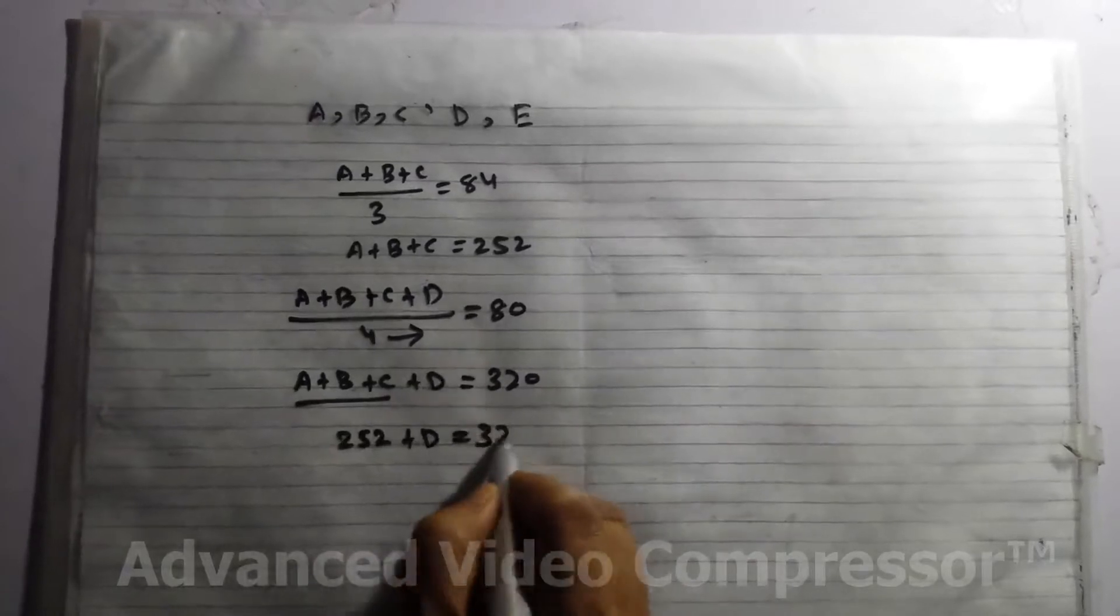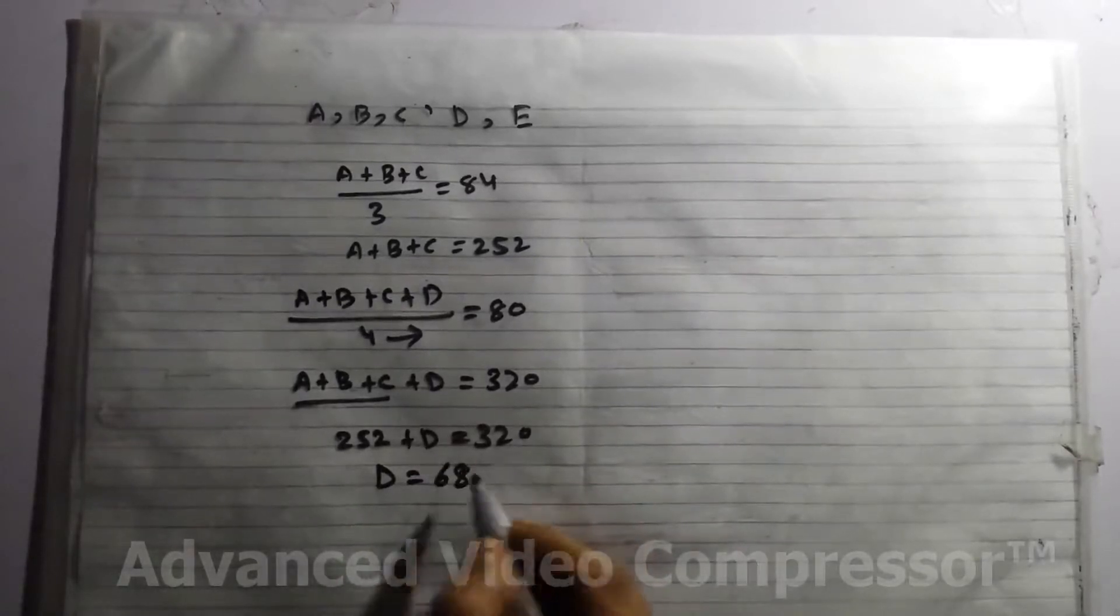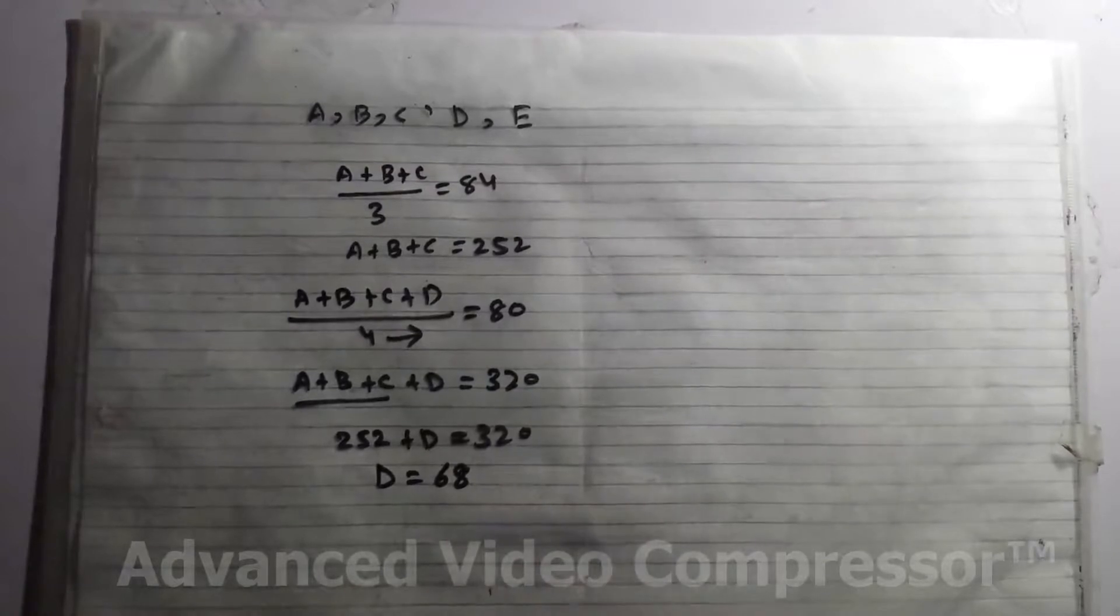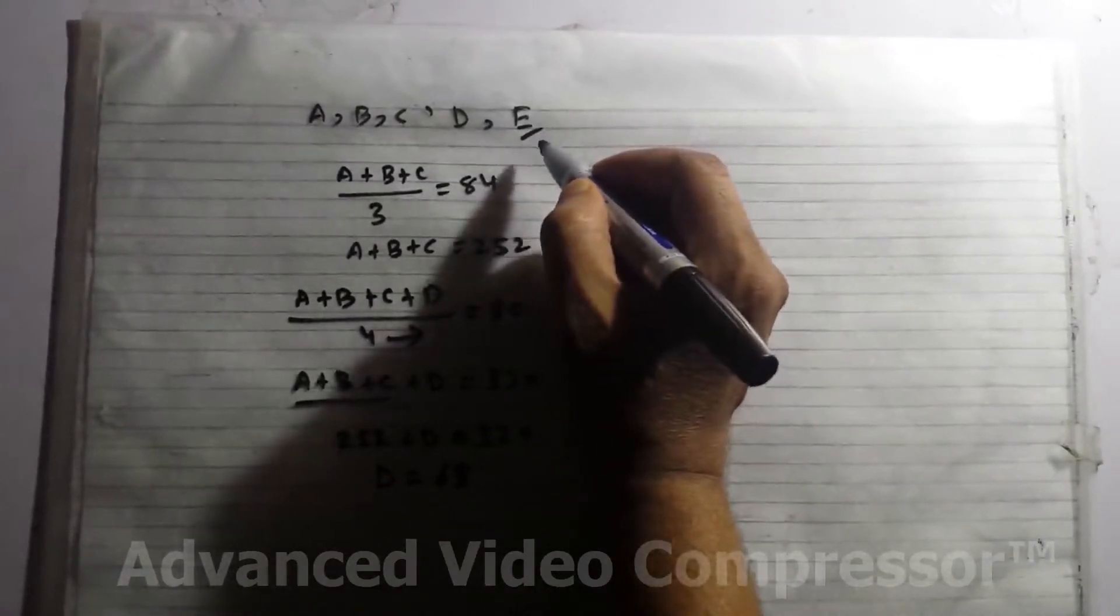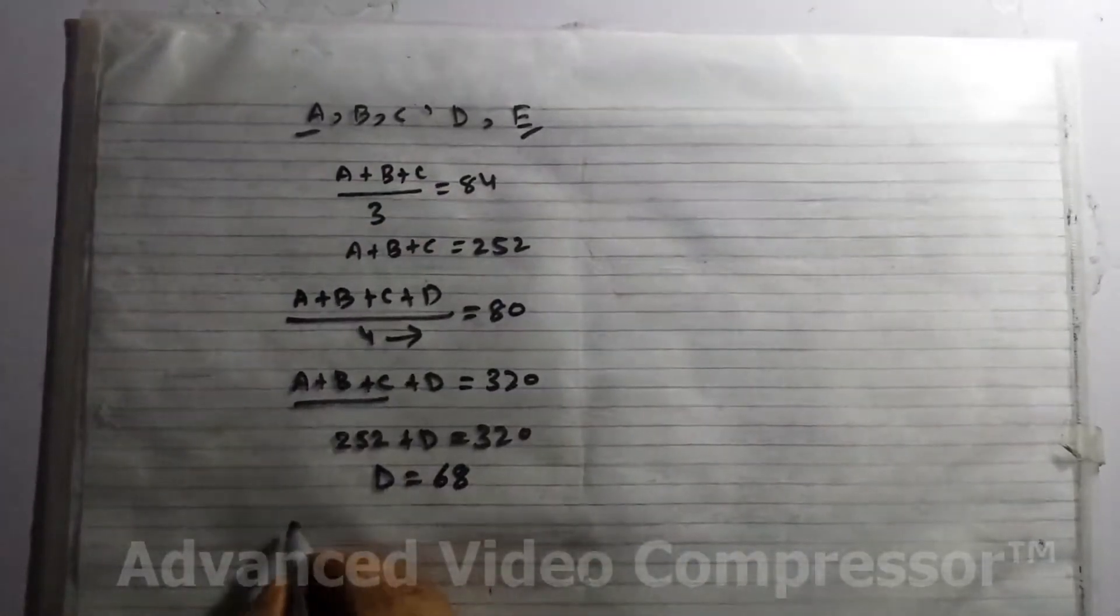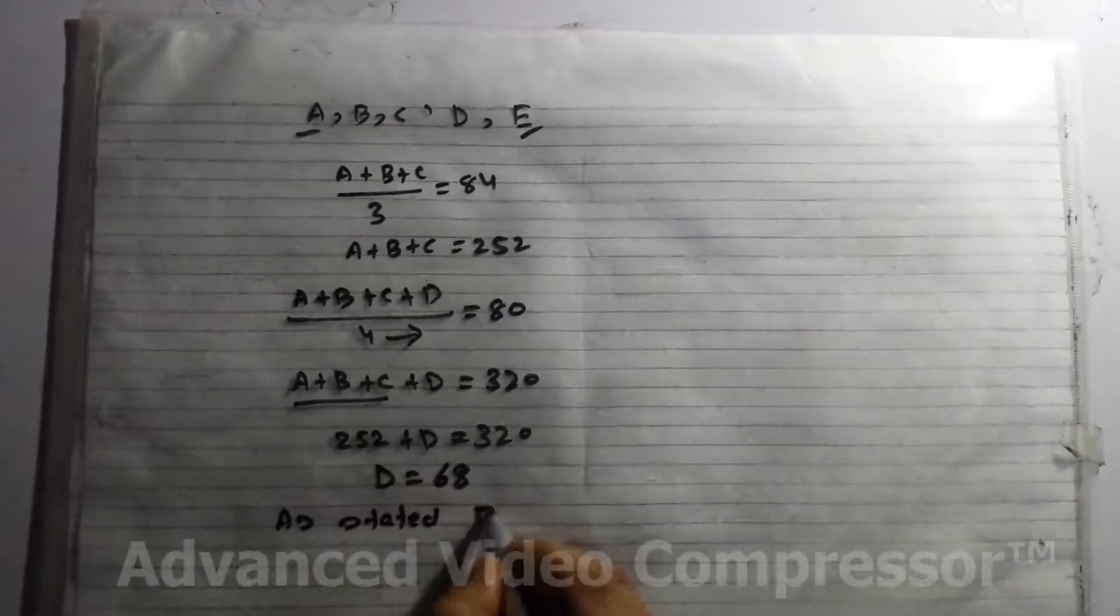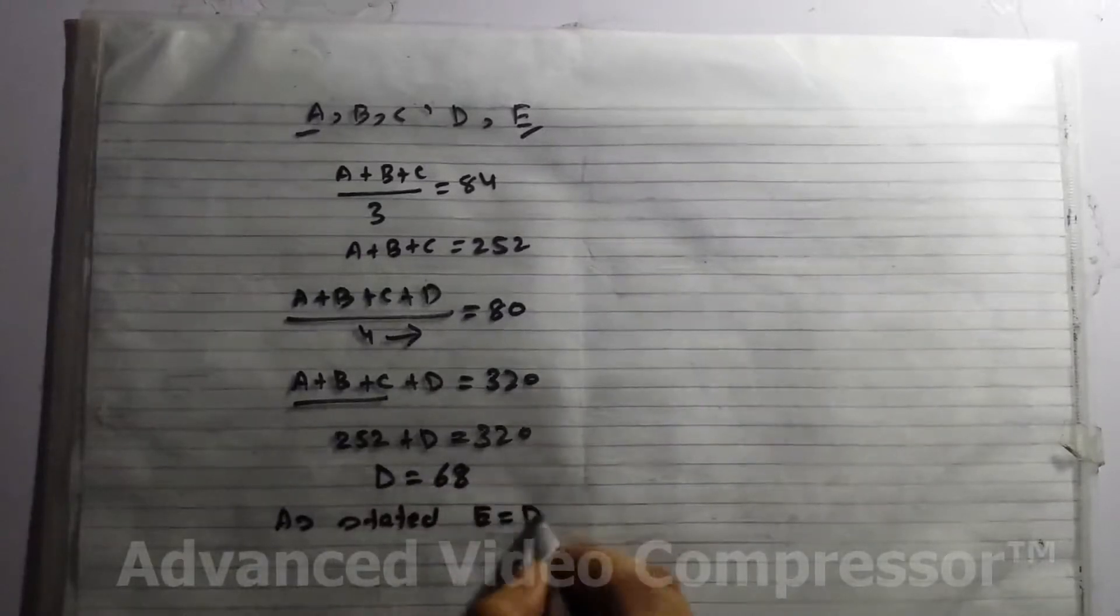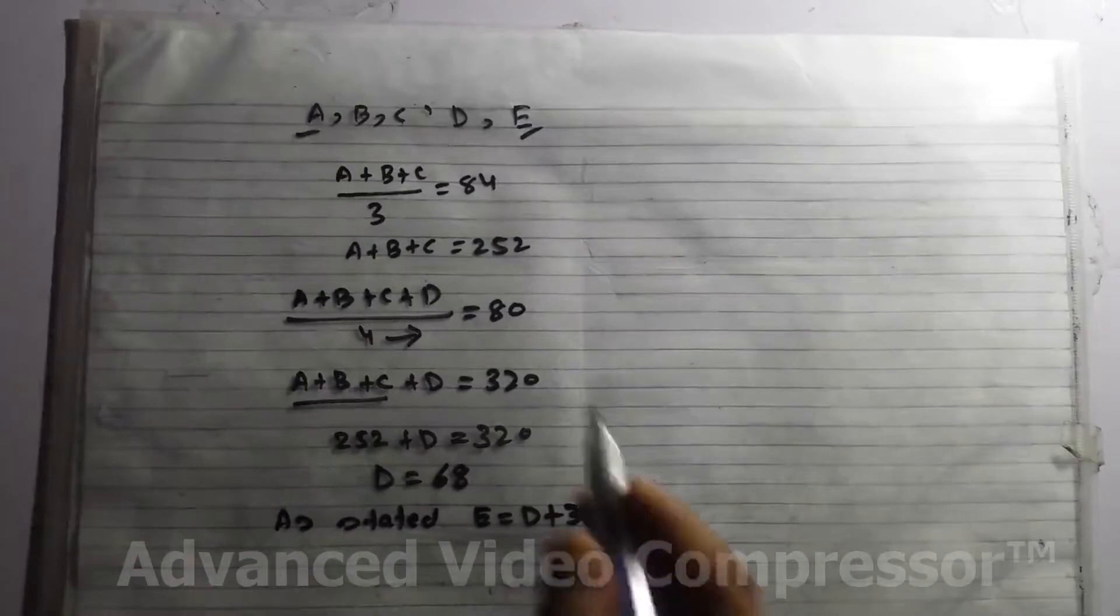So D equals 68. Now the next condition comes: if a fifth person E replaces A, but E's weight equals D + 3. E is a fifth person whose weight is 3 kilograms more than D, replaces A.